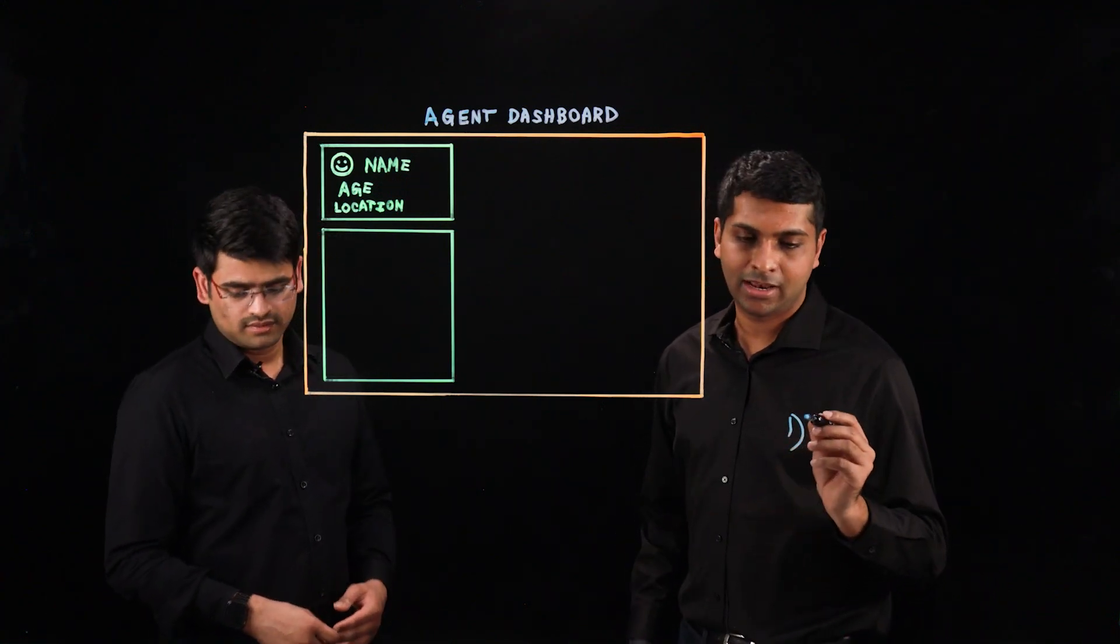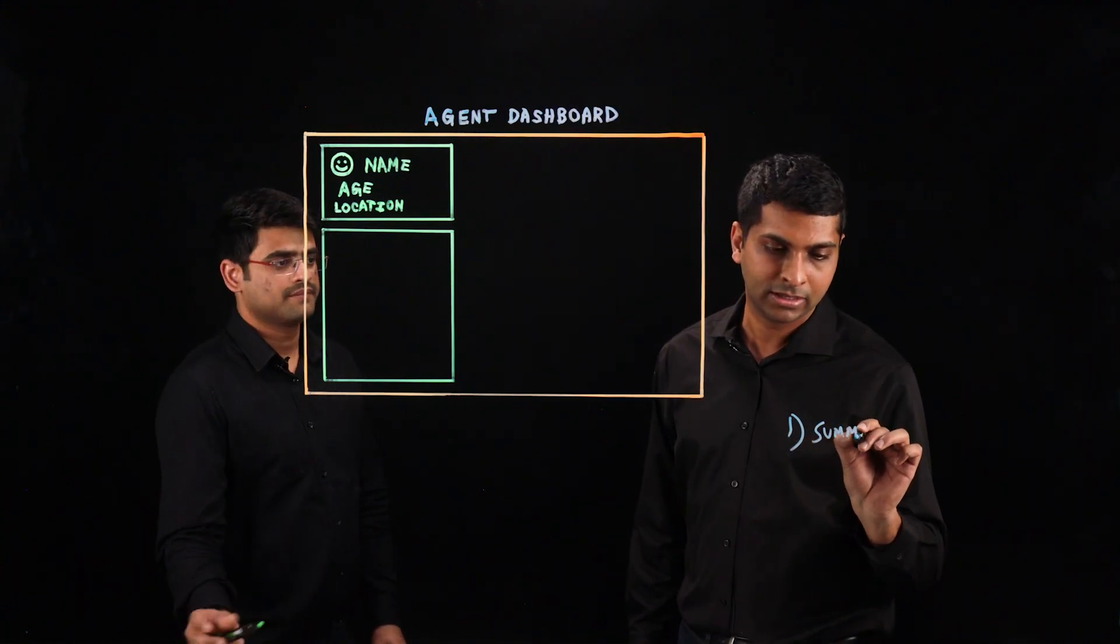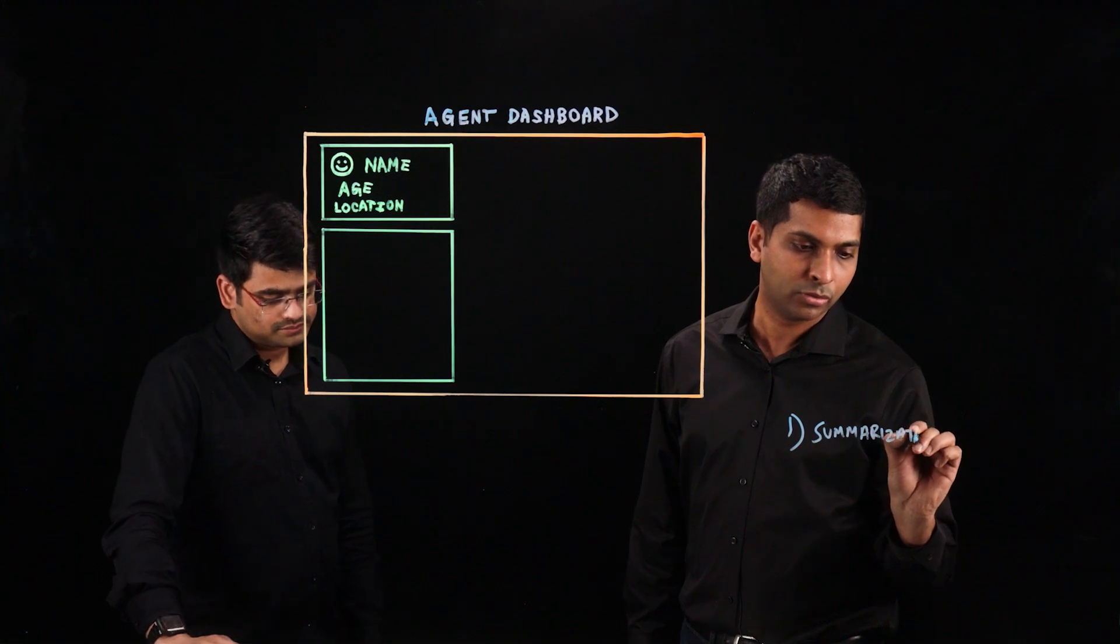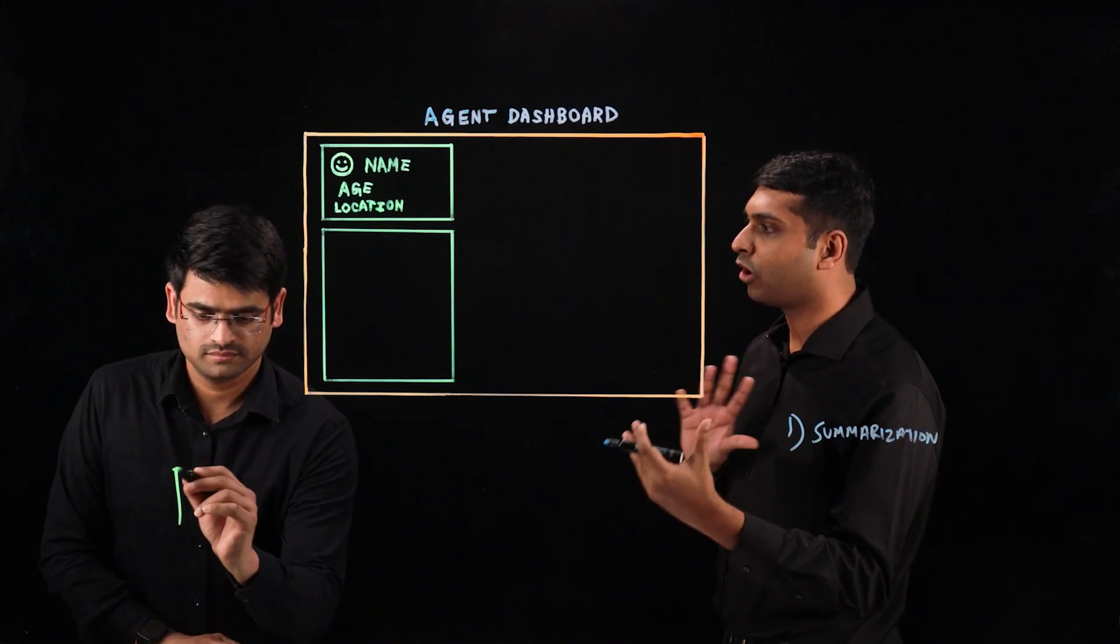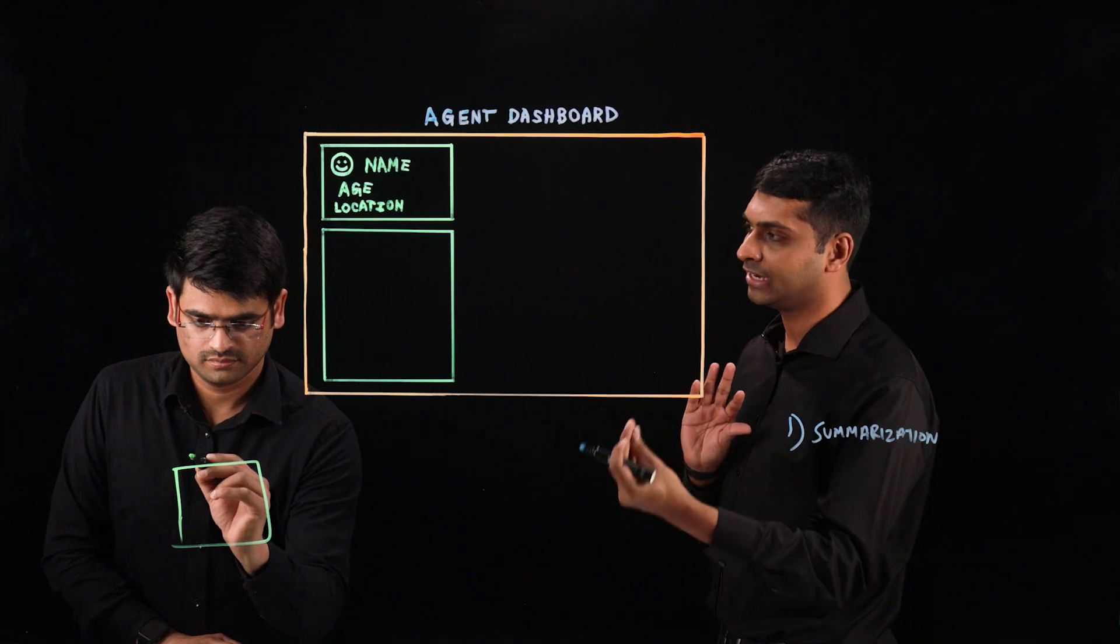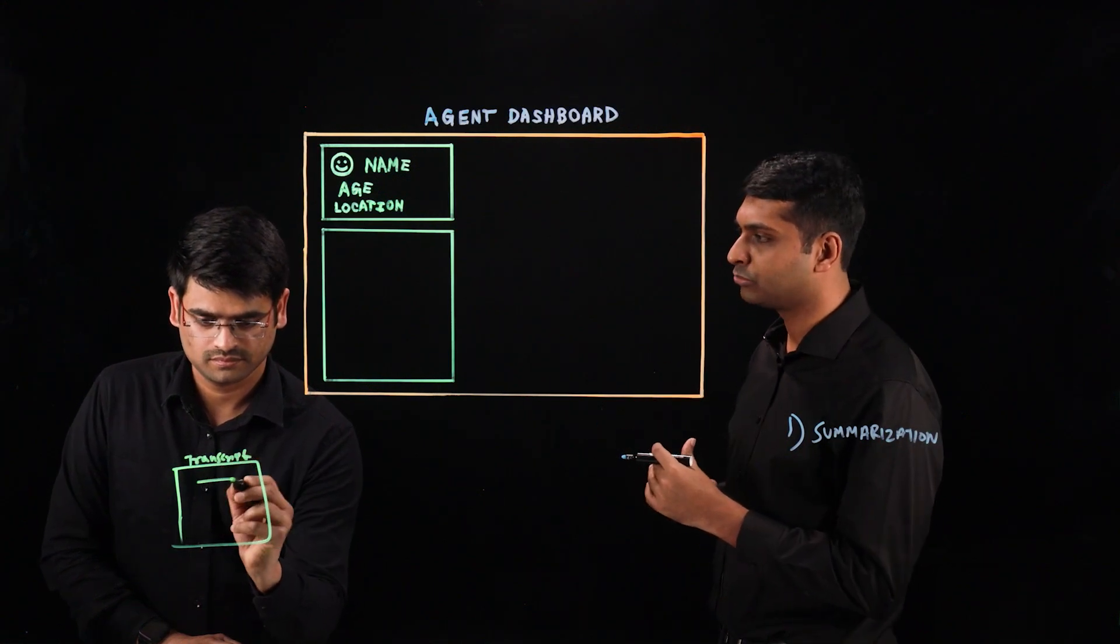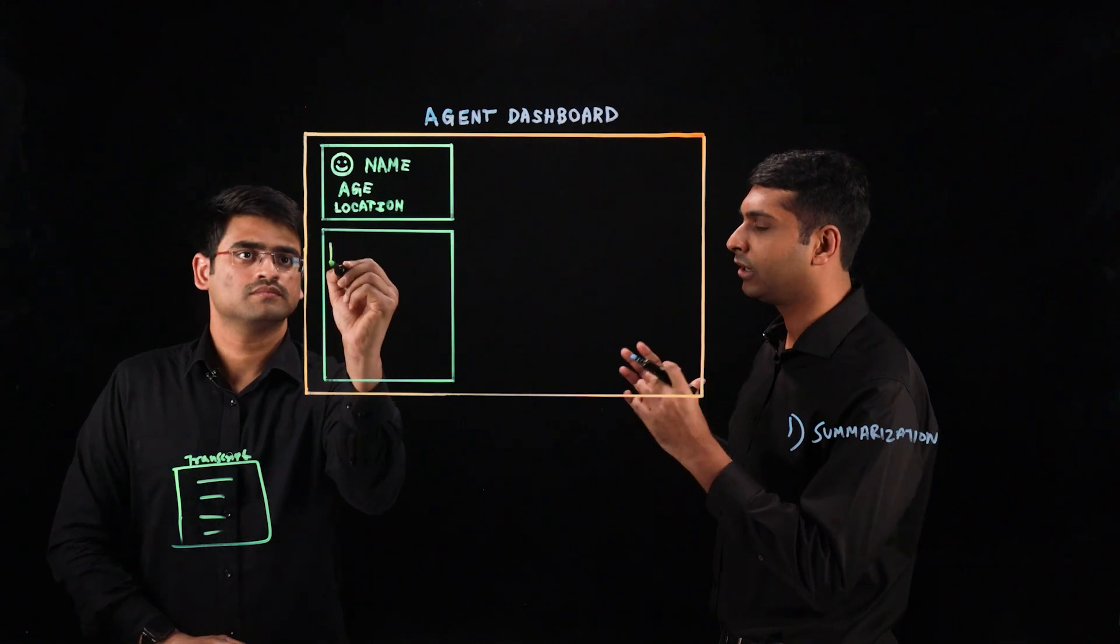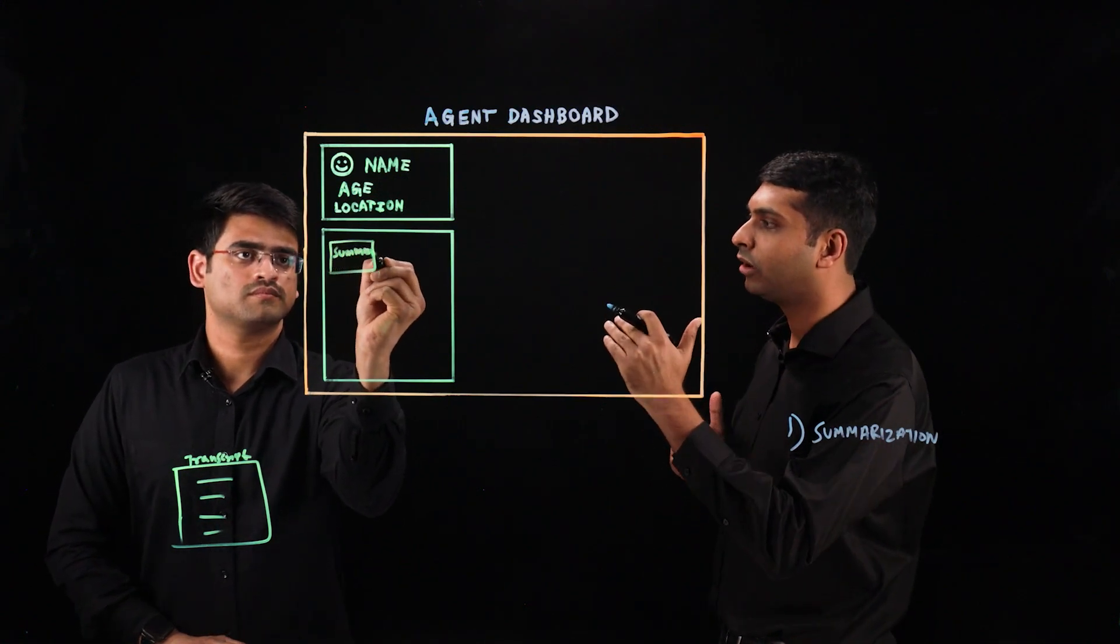So we can use LLMs or large language models to do a number of different things, such as summarization. So let's say we take a previous call transcript between an agent and a customer. We run that through a large language model, and the large language model can then generate a short summary of that entire long call transcript.